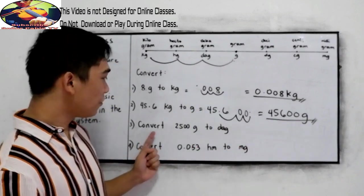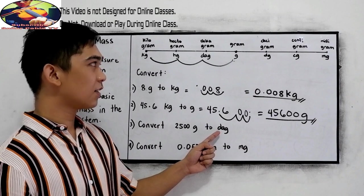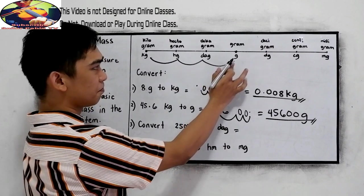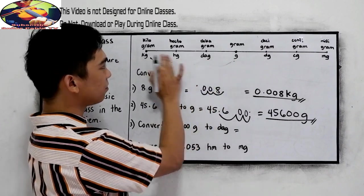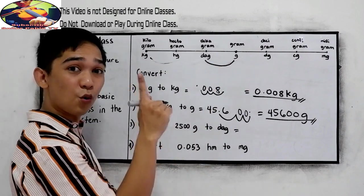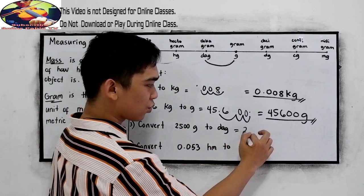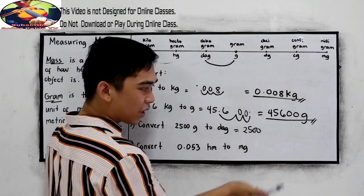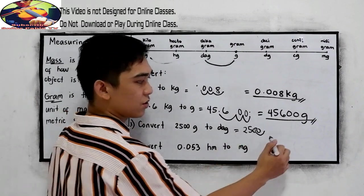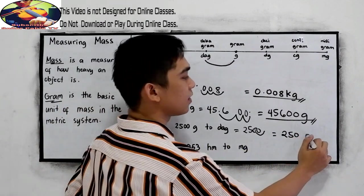Next, convert 2,500 grams to decagram. Grams to decagram, one, two. We need to move two times to the left. So 2,500, we know that the decimal point is located here. So move one unit to the left. So our answer will be 250 decagram.